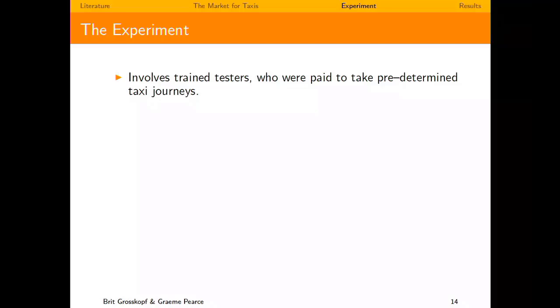We take testers — confederates, actors — recruited for research purposes. When doing field experiments and going through ethics approval, some universities are more hesitant. Our restriction was that we could not screen testers on any kind of category, so we couldn't specify how many of each ethnicity. Once we advertised and got responses, anybody fulfilling the criteria had to be employed — unfortunately that limited our ability to target certain ethnicities as we wanted.